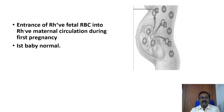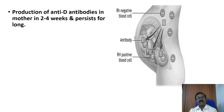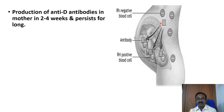Usually the first baby may be normal. Production of the anti-D antibody in the mother takes 2 to 4 weeks and persists for a long time after entry of fetal Rh positive cells during the first pregnancy.